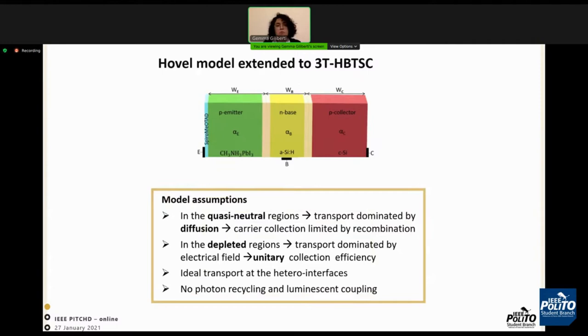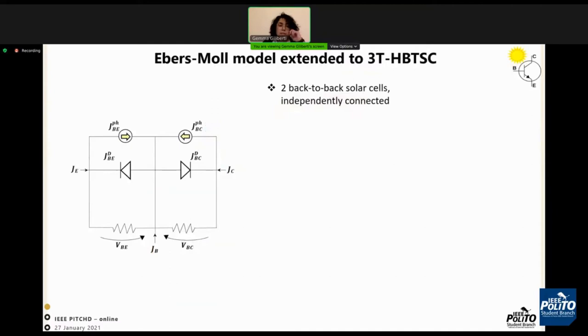In order to do that, we have extended the classical model of the bipolar transistor under illumination. We assume that in the quasi-neutral region there is only the diffusion mechanism for transport, and in the depleted region only unitary collection efficiency, meaning that for each photon absorbed there is one electron-hole couple photogenerated. We have assumed ideal transport at the hetero interfaces, neglecting photorecycling.